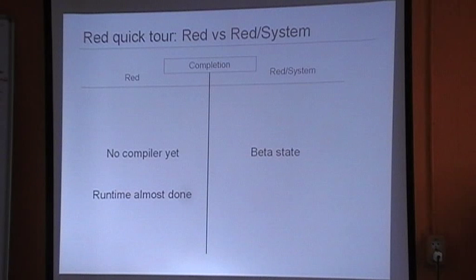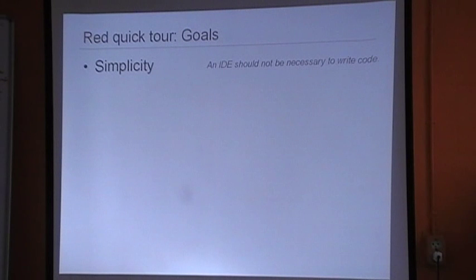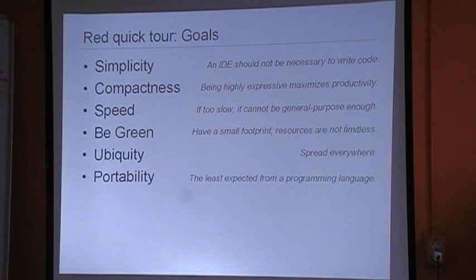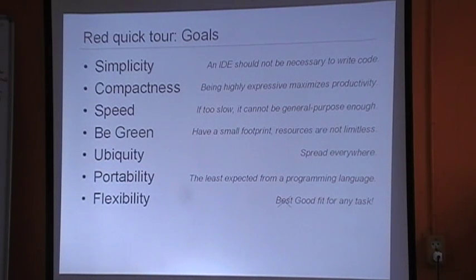Regarding level of completion: Red/System is pretty much advanced and in beta state. For Red, the runtime is almost done with still some work remaining, and the compiler is not yet ready. As a reminder, Red should fulfill all its goals once ready — ubiquity is a nice one, and that's something we already support pretty well.